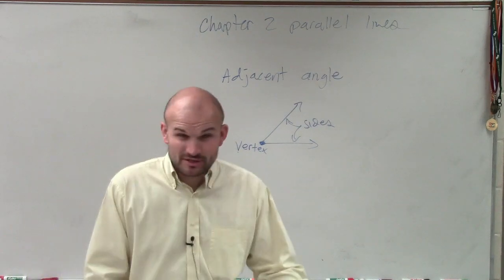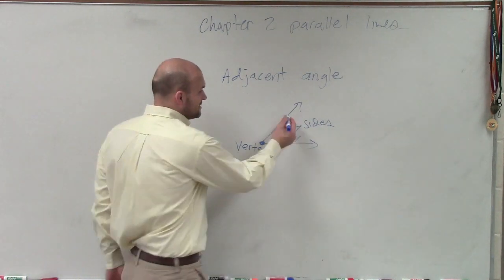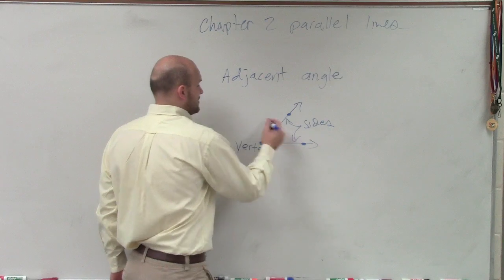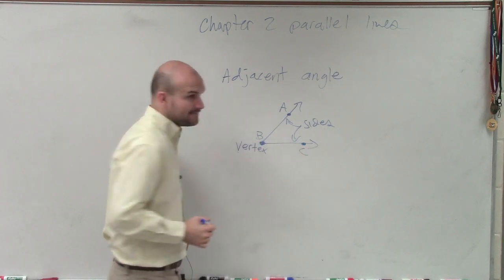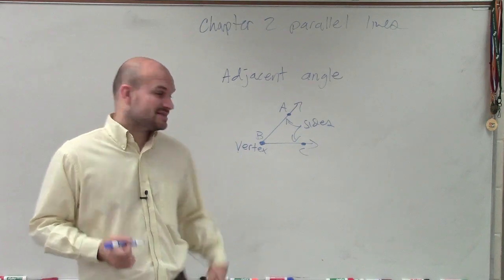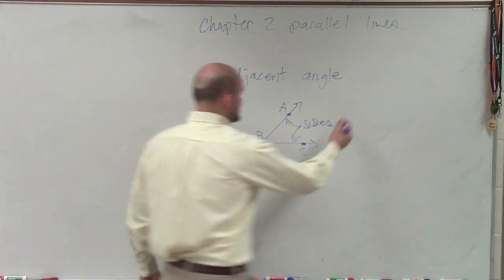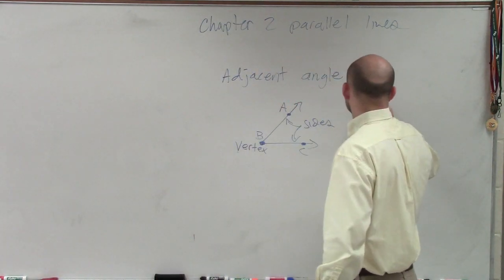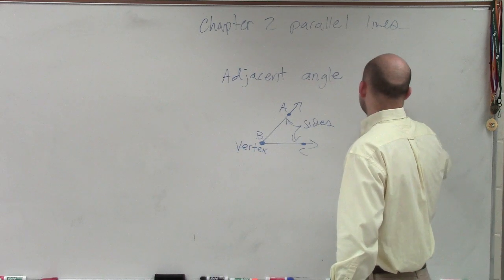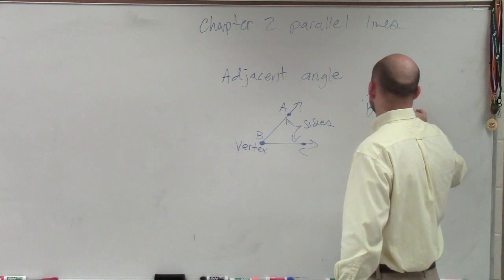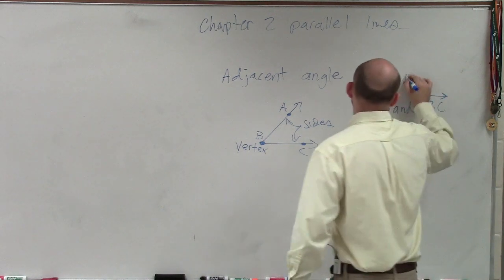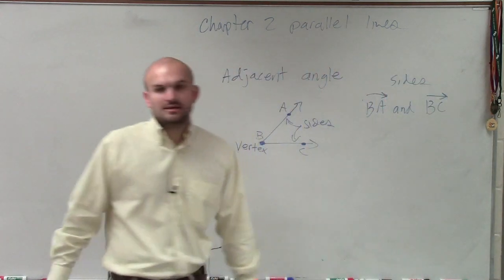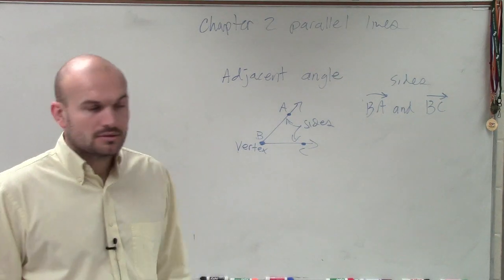Now remember, you guys had a little bit of trouble with this when we talked about naming the sides. If I called this A, B, and C, some of you guys had trouble naming the sides. Here's an angle. You can say the sides are BA and BC. Those are what we call the sides of the angle.